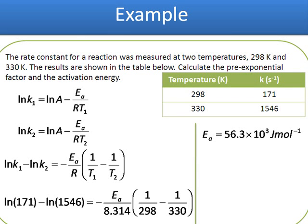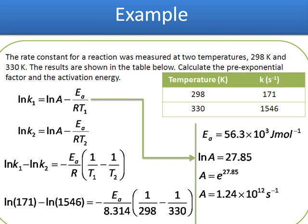I can now plug in that 56.3 kJ per mole into one of my equations. Here I put it into the first. Using my temperature T1 and my rate constant K1, I get a value of A equals 1.24 by 10 to the power of 12 per second.